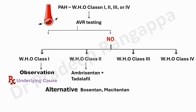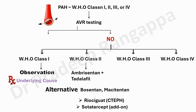Alternative options include bosentan or macitentan. Riociguat is a pulmonary vasodilator which has to be considered especially when you have chronic thromboembolism pulmonary hypertension, which we call CTEPH. There is also a new drug called Sotatercept, an injectable given subcutaneously every three weeks, though it is not available in India at this point. What are available are ambrisentan, which comes as Endoblock, tadalafil, bosentan, and riociguat, available in India as Adempas.